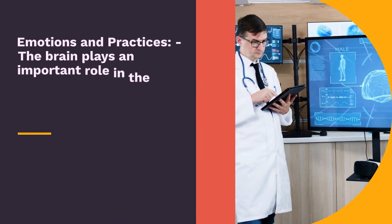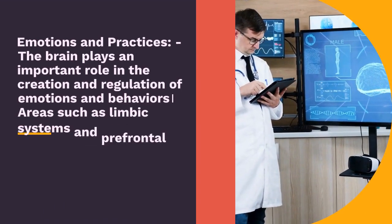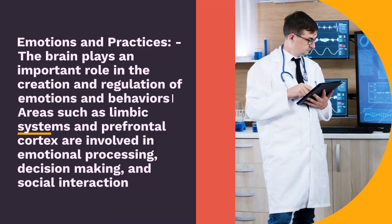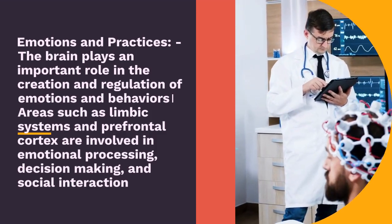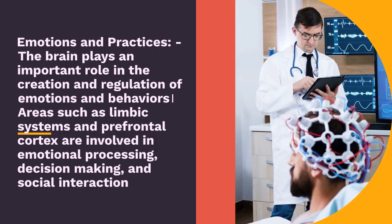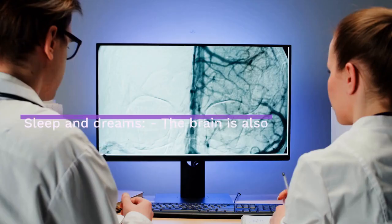Emotions and behaviors: the brain plays an important role in the creation and regulation of emotions and behaviors. Areas such as the limbic system and prefrontal cortex are involved in emotional processing, decision making, and social interaction.